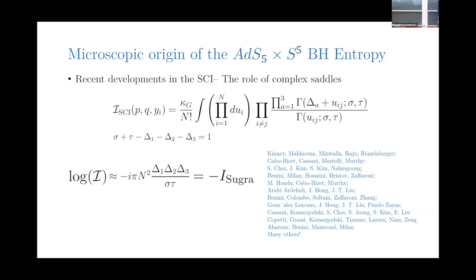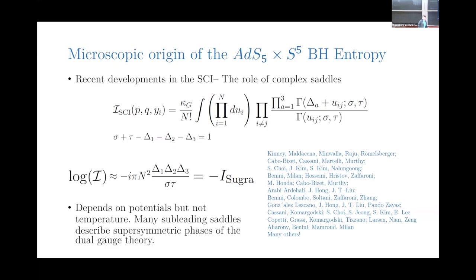The development in more recent years — which has a huge number of authors — is that we should consider complex saddle points. When we have complex chemical potentials, we'll be able to find a complex saddle point of this matrix integral. In particular, we're analytically continuing the holonomies away from the region where they're usually defined. This sounds a bit like analytically continuing the whole path integral, and it's natural here to consider complex metrics as well. The result is that at the large-N complex saddle point, we can write the action of the supergravity theory as this particular combination of chemical potentials growing like N squared, which is the same as the logarithm of the index computed in the matrix model.